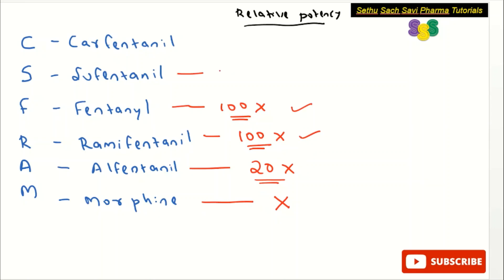Sufentanil is 1000 times more potent compared to Morphine. Whereas Carfentanil is 10,000 times more potent compared to Morphine. So to summarize the mnemonic CSF RAM: Morphine is 1x, Alfentanil is 20x, Remifentanil and Fentanyl are both 100x, Sufentanil is 1000x, and Carfentanil is 10,000x.